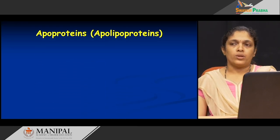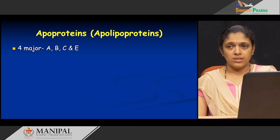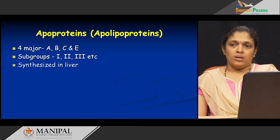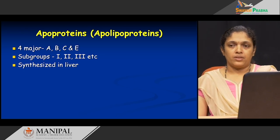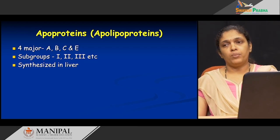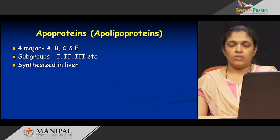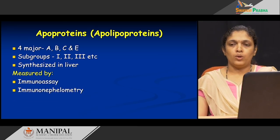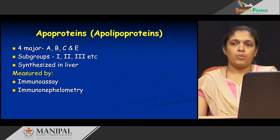What are these apoproteins, or apolipoproteins? There are four major types: apo A, apo B, apo C, and apo E. These major groups have further subgroups like apo A1, apo A2, apo A3, and so on. Basically, these apoproteins are proteins synthesized in the liver, which is the major site of synthesis. To measure the levels of apolipoproteins in the blood, two important methods are used: the immunoassay technique and the immuno-nephelometry method. The most important two apoproteins are apo A and apo B.